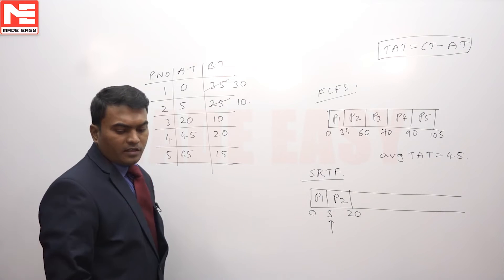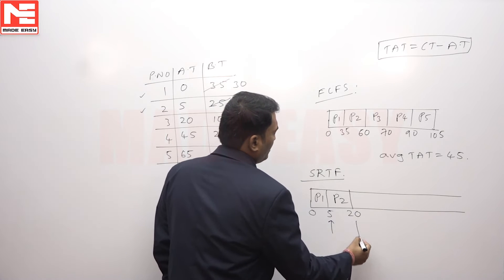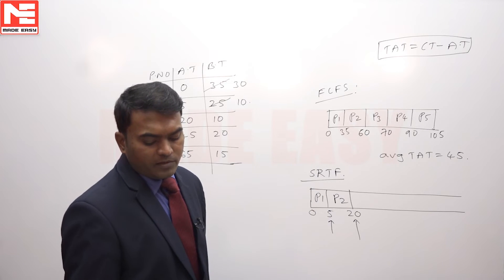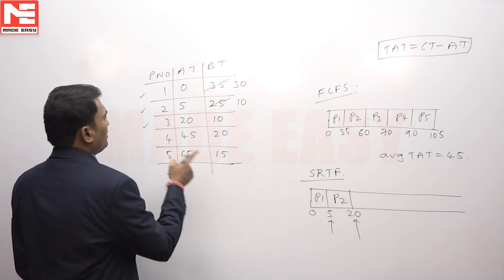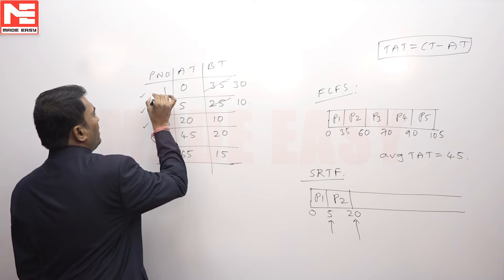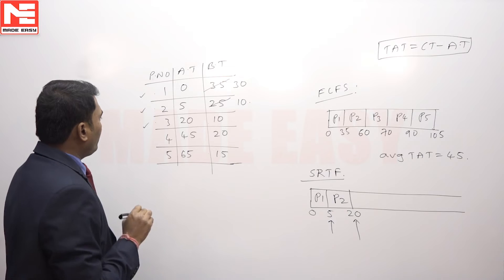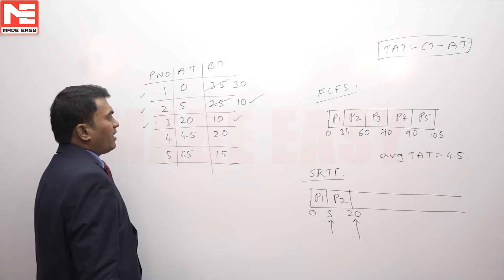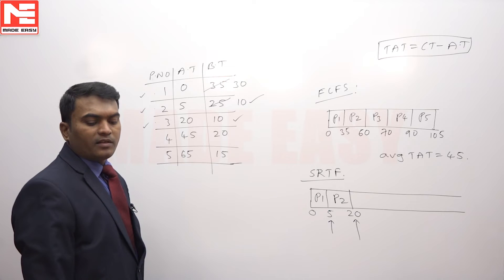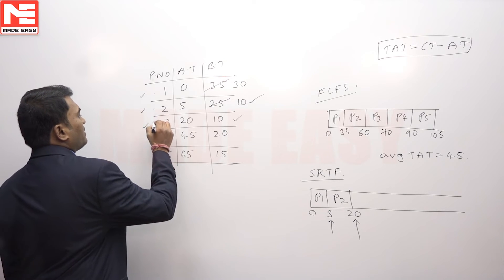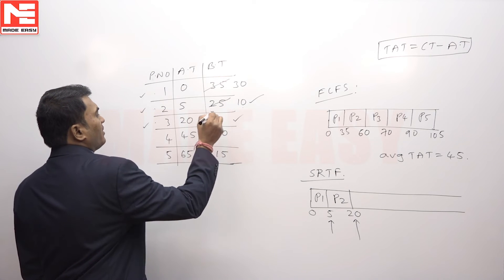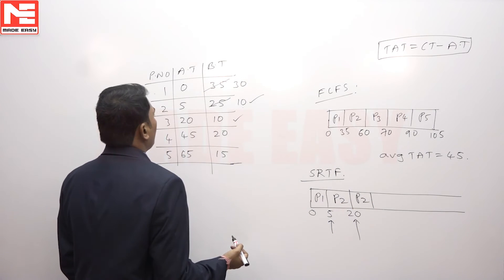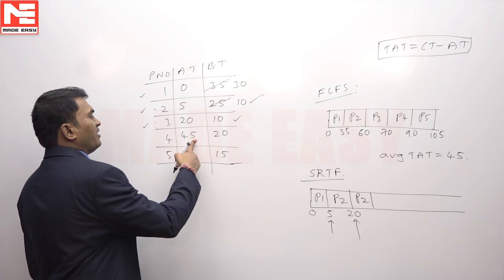At present time 20, P1, P2, and P3 are all available. P2 and P3 both have remaining burst times of 10 — they are matching. When burst times match, we follow arrival time. P2 arrived first, so continue with P2. P2 requires 10 more seconds, and the next process P4 arrives at 45, so continue P2 for 10 seconds. That brings us to time 30, and P2 becomes 0 — P2 is completed.